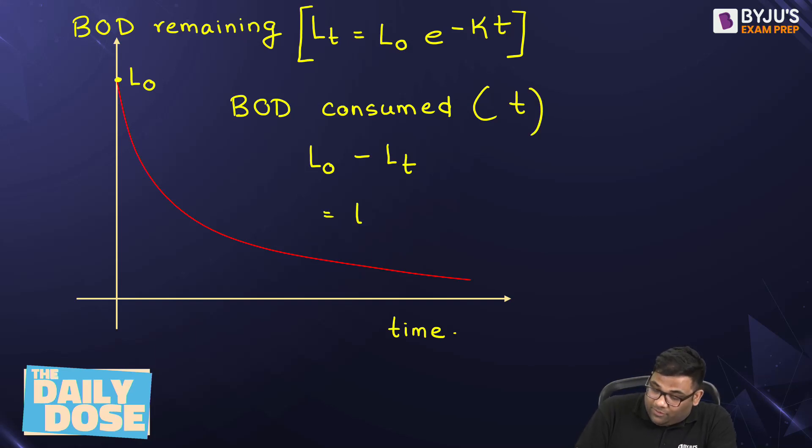So this will be equal to L0 minus L0 e to the power minus k into t. So this gives me L0 (1 minus e to the power minus k into t). This is the BOD consumed.